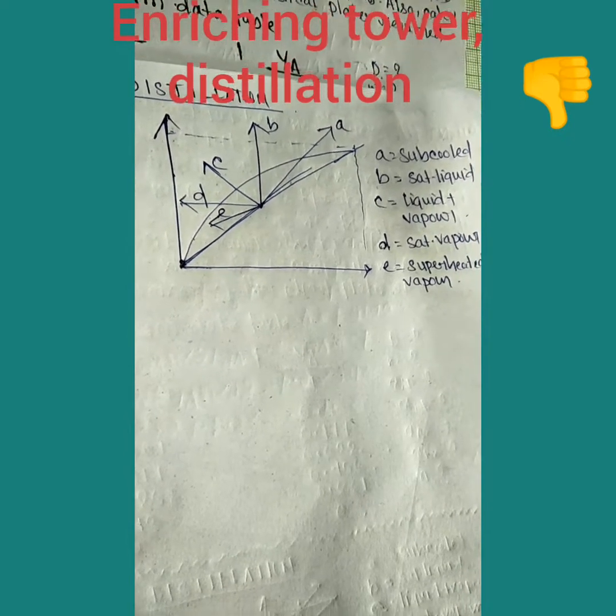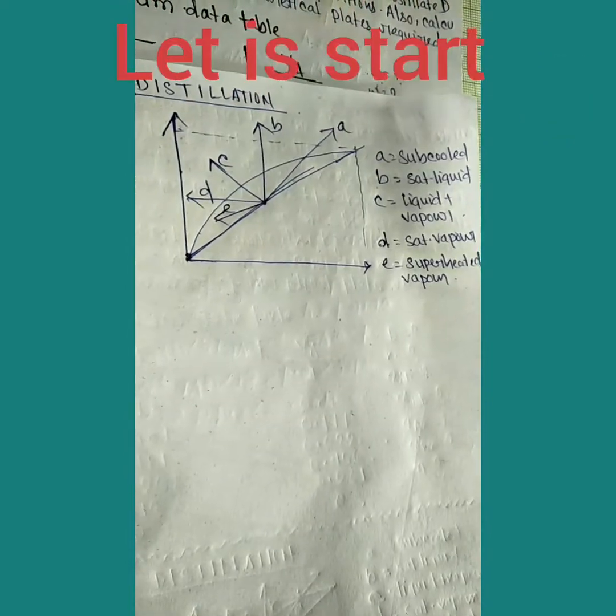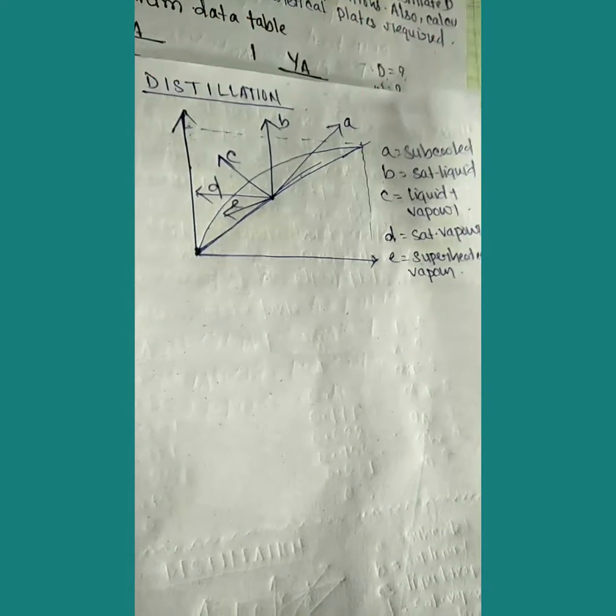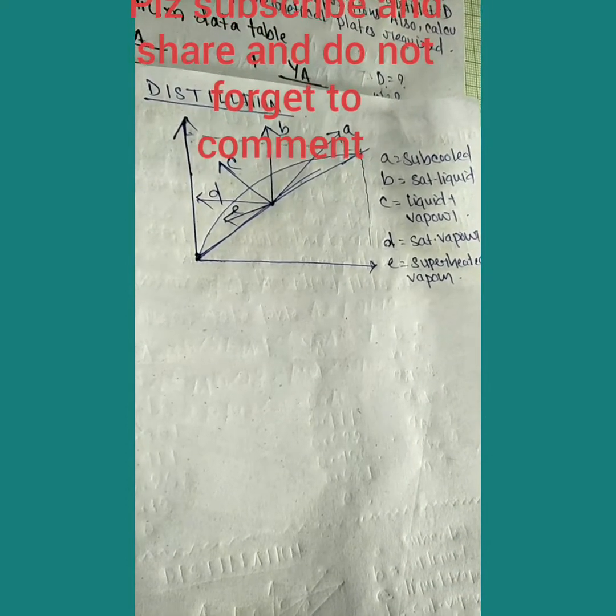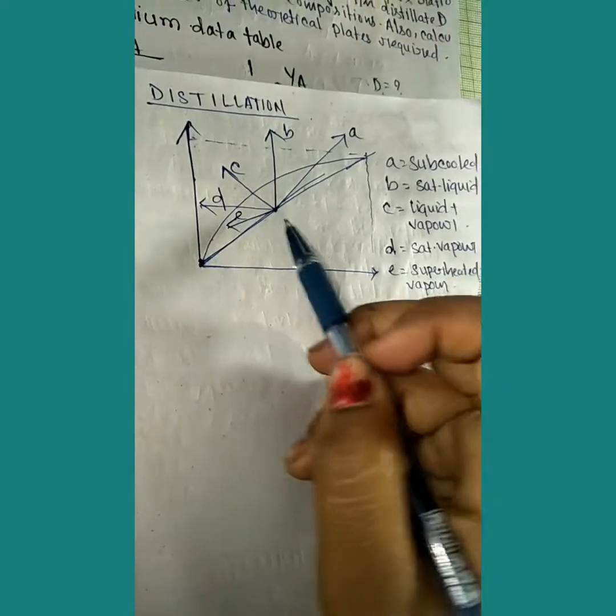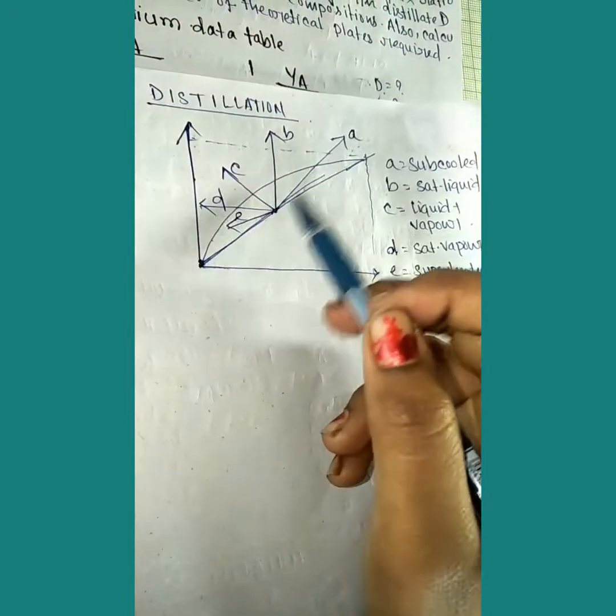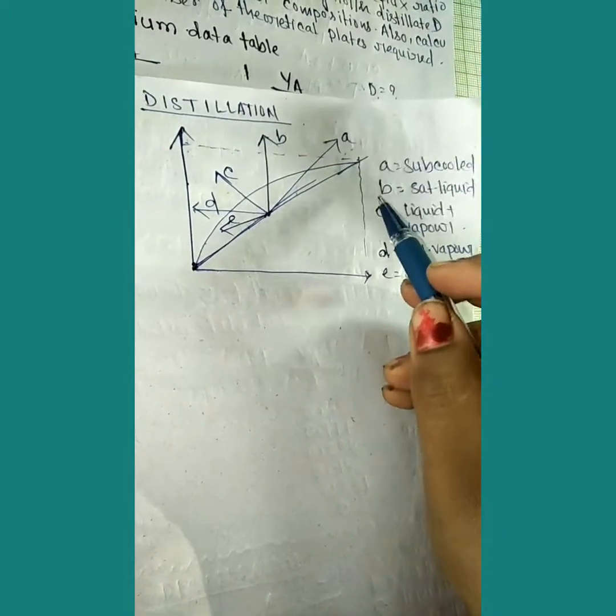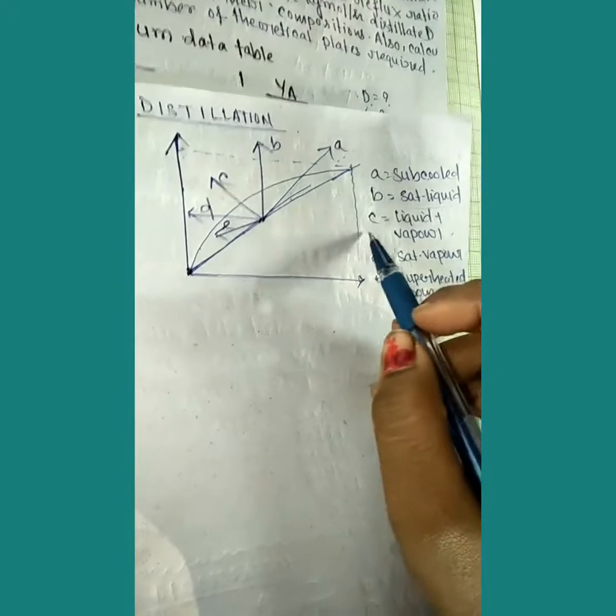Today we're taking up a problem on distillation, focusing on the enriching tower section. To solve this type of question, you first need to know the different types of feed lines. There are five types of pipelines: A, B, C, D, and E. A is subcooled condition, B is saturated liquid, C is liquid vapor condition.